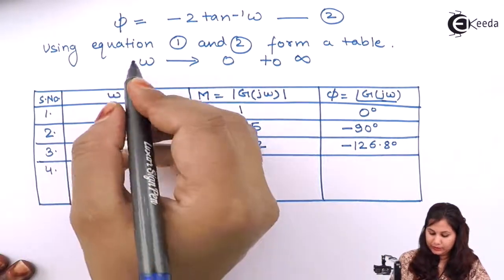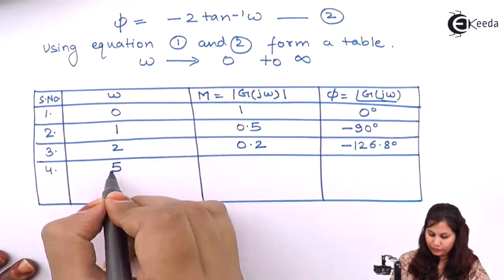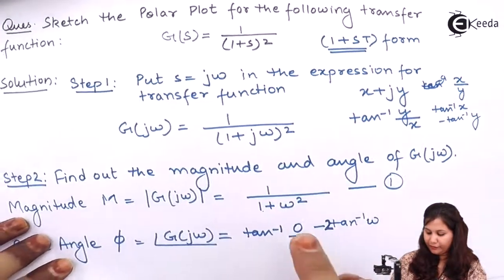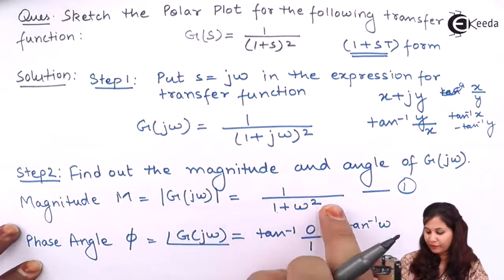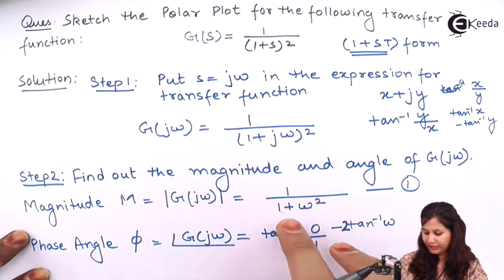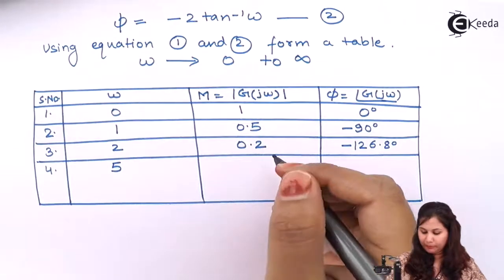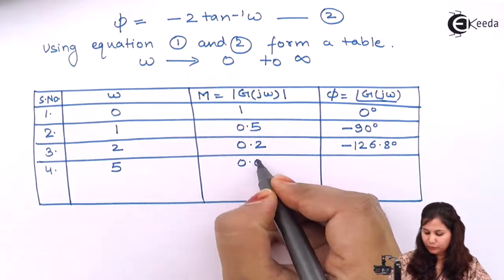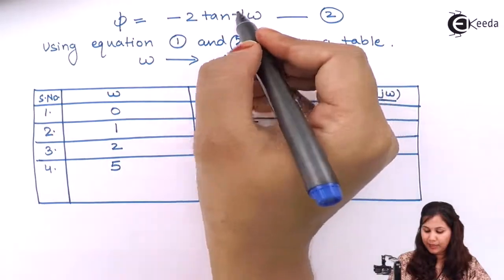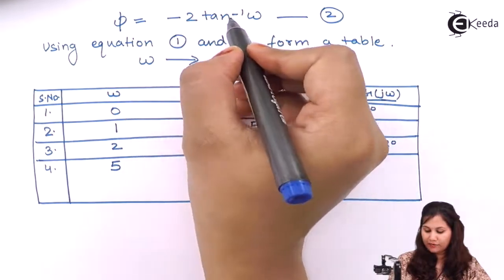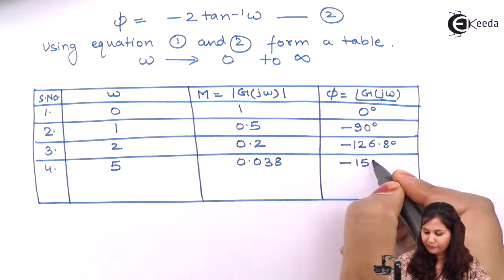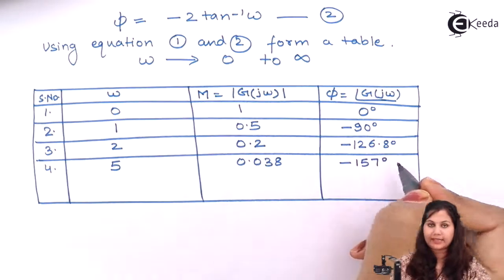Now let's take ω = 5. Putting 5 in the magnitude equation: 5² = 25, so 1 / (1 + 25) = 1/26, giving a magnitude of 0.038. The phase angle is −2·tan⁻¹(5), which comes out to be −157 degrees.